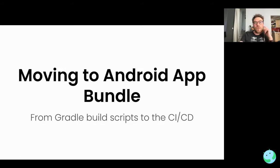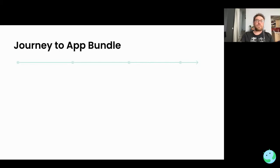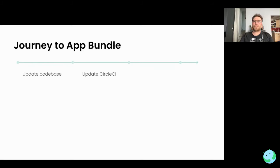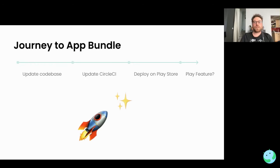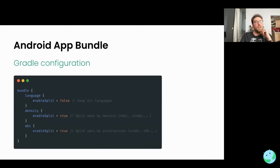Now let's see how we can configure our application — from the Gradle side to our CI/CD and testing. The journey to Android App Bundle starts with a small update to your codebase, then we'll see how to automate everything with CircleCI and Fastlane to deploy to the Play Store, and after that we may implement Play Feature or Asset Delivery — up to you.